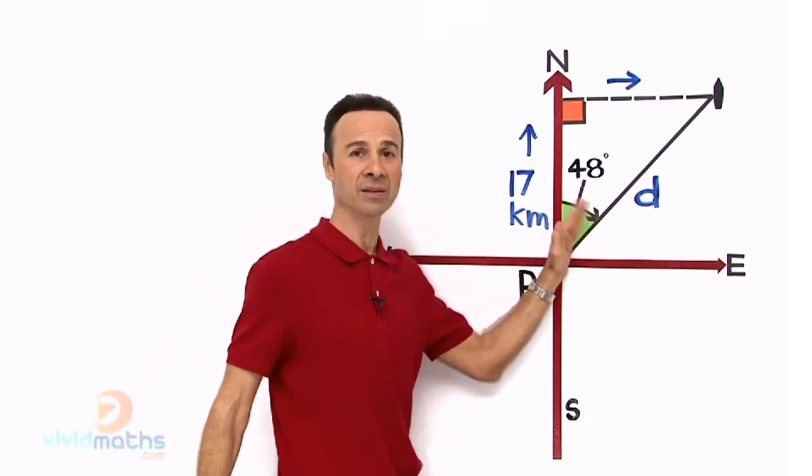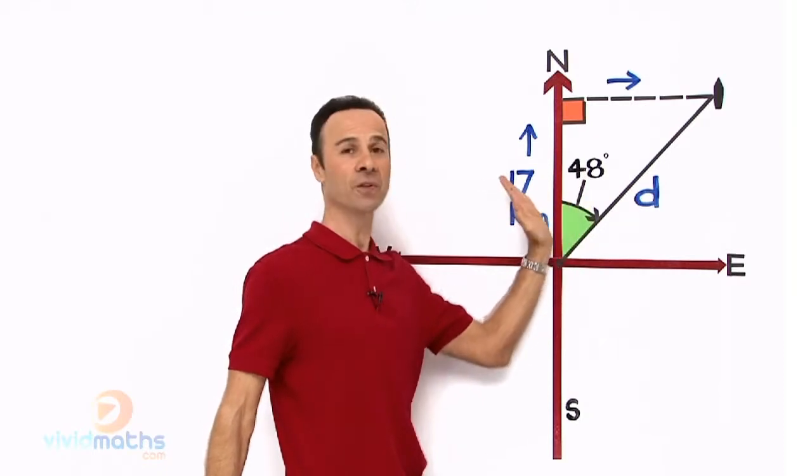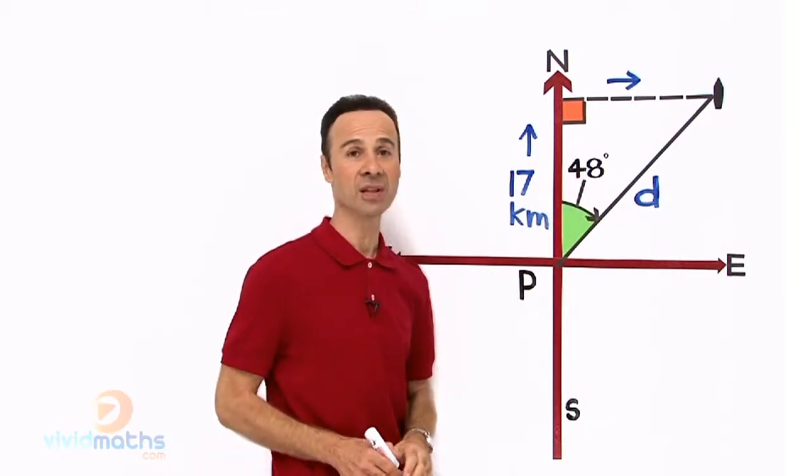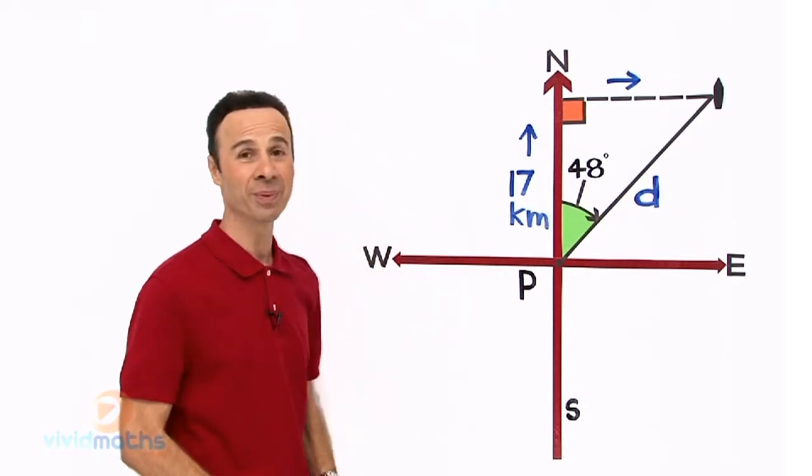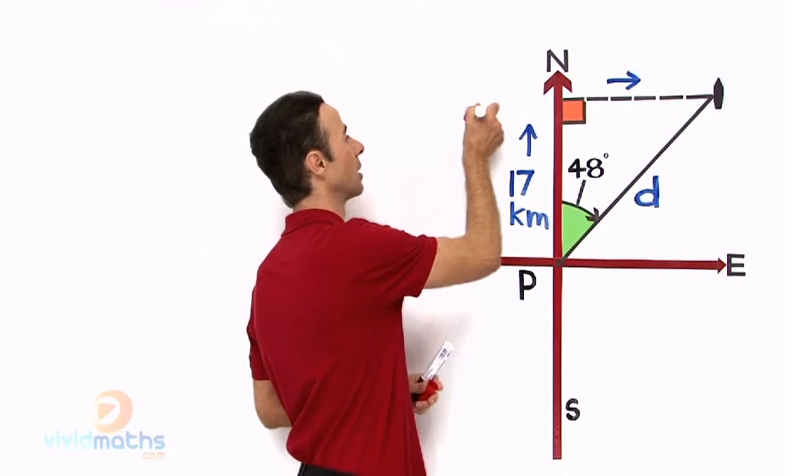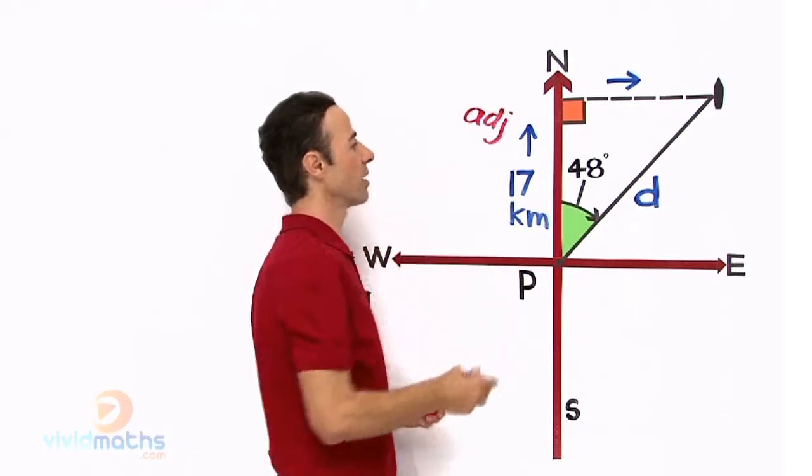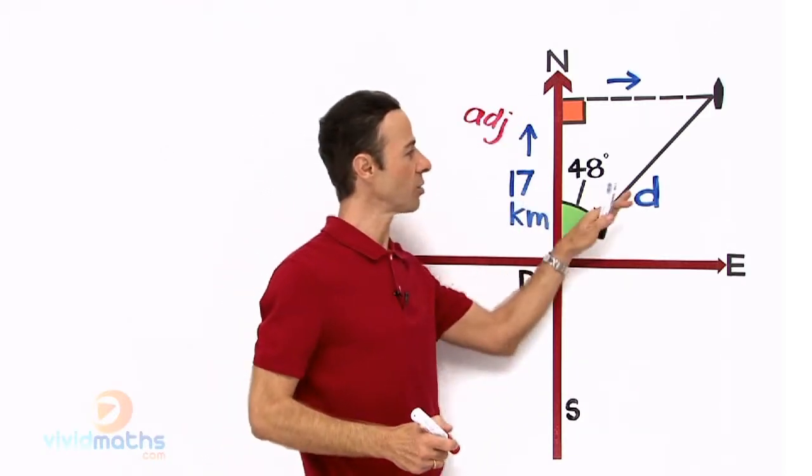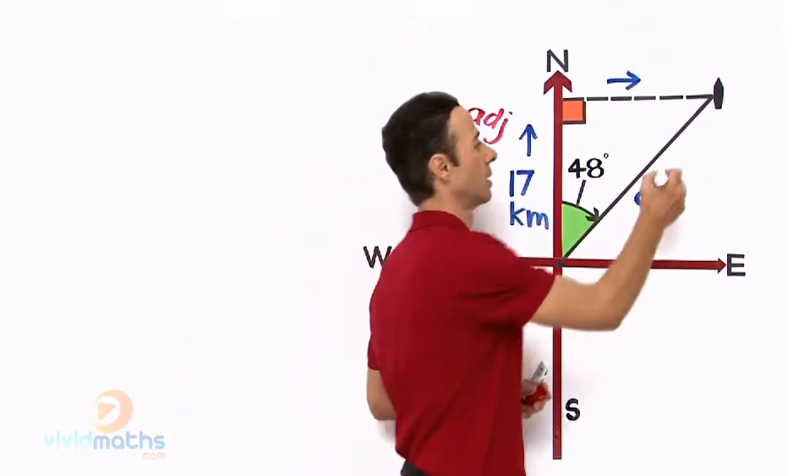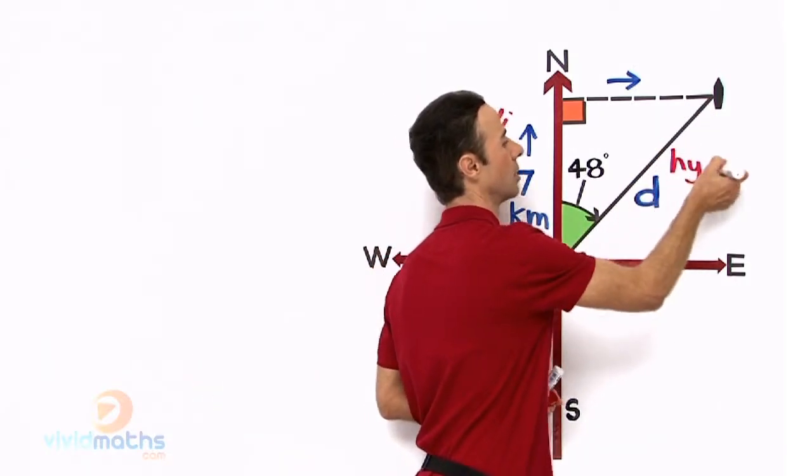Now by pointing it all out, well here is the angle, 48 degrees. Now to its left or right, next to it, we have 17 km. Now because it is next to it, it is going to be what? It is going to be ADJ, it is adjacent, isn't it? ADJ over there, adjacent. And over here to the right, the long length obviously is the hypotenuse.